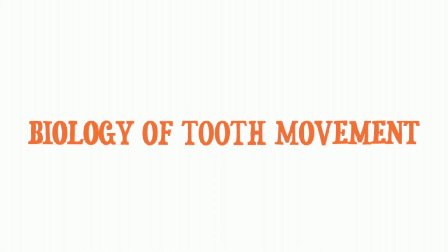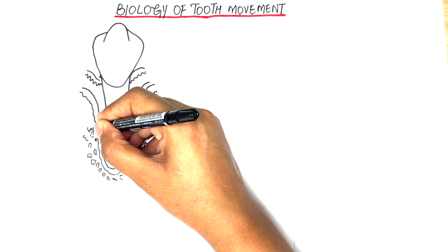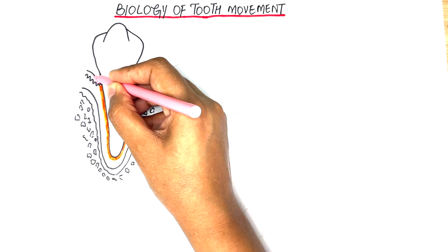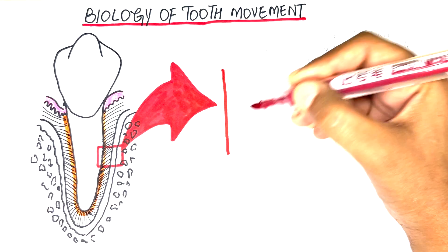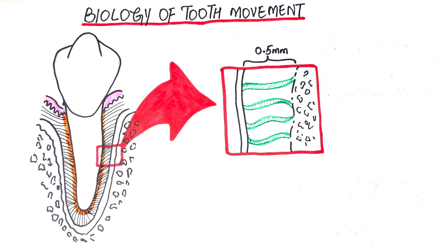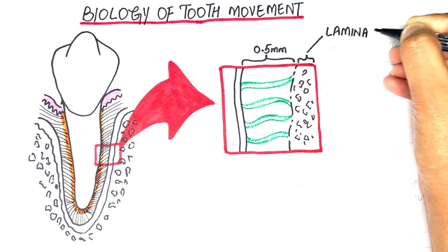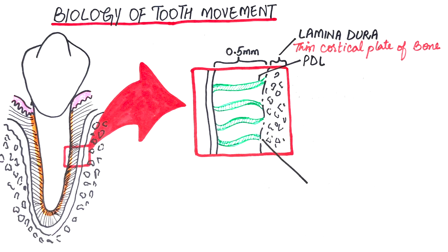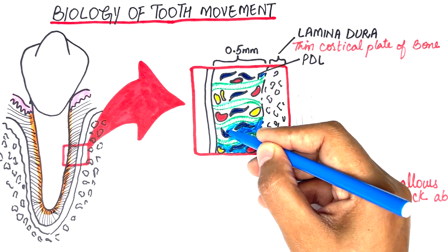Did you know that a tooth, as a reaction to orthodontic treatment, moves with its entire attachment apparatus? The attachment apparatus of a tooth, crucial for tooth movement, lies in the PDL space and occupies approximately 0.5 mm in width. The PDL space acts as a fluid-filled chamber surrounded by retentive but porous walls of the laminar dura, allowing the PDL to play its role as a shock absorber.